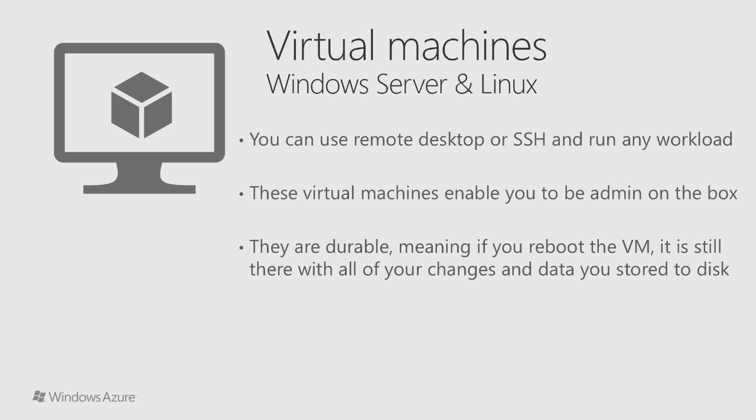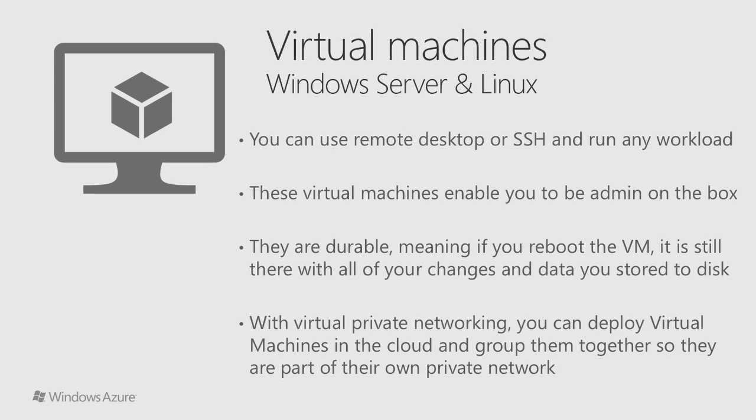Azure also enables what we call virtual private networking. With virtual private networking, you can deploy virtual machines in the cloud and group them together so they are part of their own private network. You can then connect them back to your corporate network and establish a VPN secure tunnel to link machines in your corporate environment or research lab to the virtual machines in the cloud, making them feel like they are part of one large connected network. So there's lots of flexibility on both the compute and networking sides.